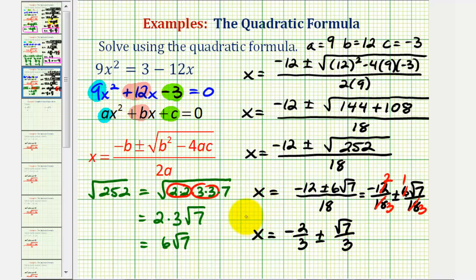We have two solutions here. Both of these are in simplified form. One solution is negative 2 thirds plus square root 7 over 3. The other solution is negative 2 thirds minus square root 7 over 3.